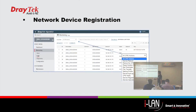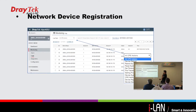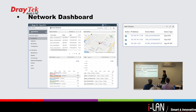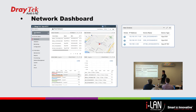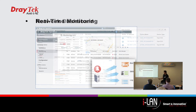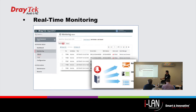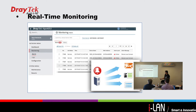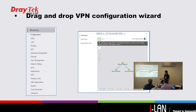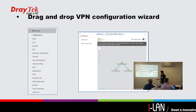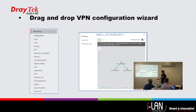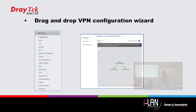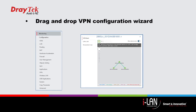This involved various tasks such as network device registration and allocation to different networks. The network status was monitored and reports generated. One of the exercises showed how quick and easy it was to set up an IPsec VPN tunnel between routers using VigorACS2.